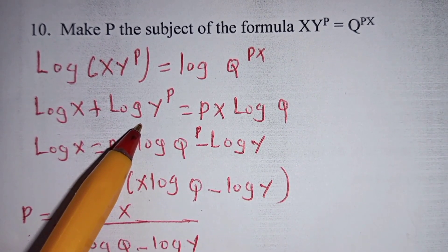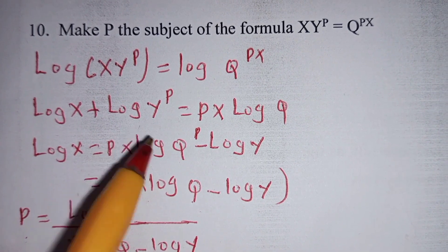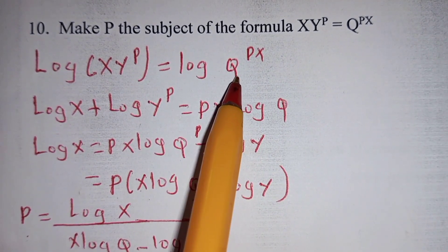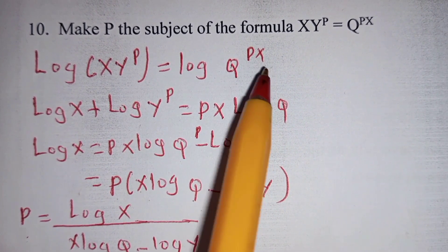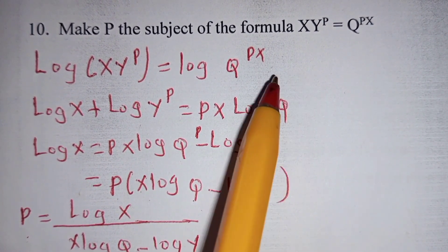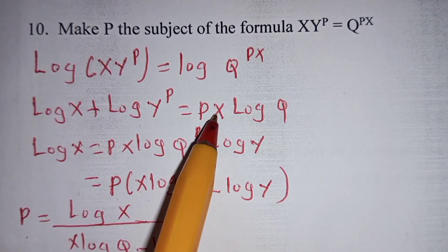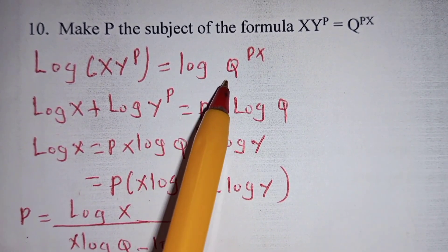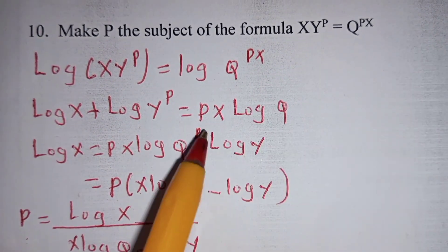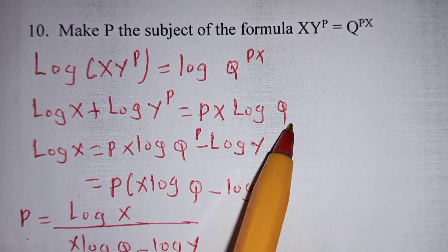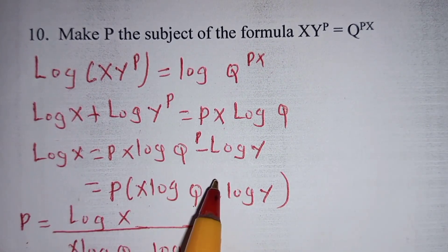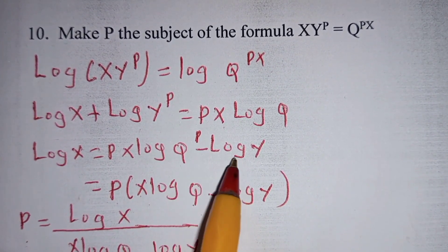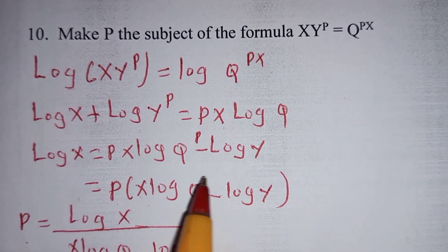Also, you make use of the indices. Whereby when you have log of a number, the index can be taken in front before the log. Instead of log Q power PX, I have written PX multiplied by log Q. In the state of log of Y power P, you can write it as P log of Y.